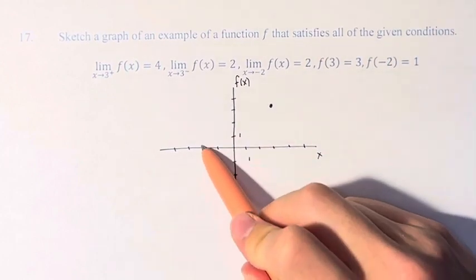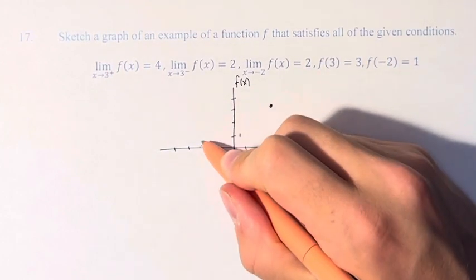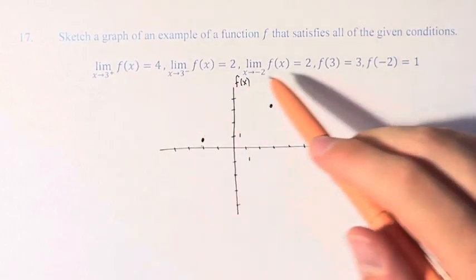At negative 2, the x value is negative 2, the y value is 1. Now we have some limits.